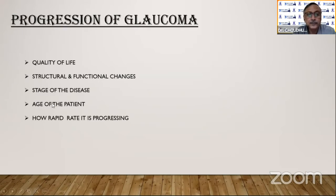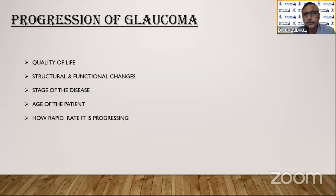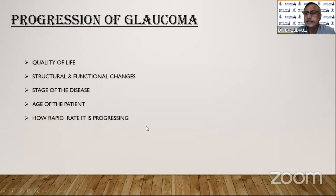Regarding the age of the patient: a younger patient has a longer life ahead, whereas an older patient has a shorter lifespan. This has to be taken into account before going for trabeculectomy. Once glaucoma progression occurs, it is sometimes very difficult to stop with drugs alone. So trabeculectomy may help depending on how rapidly it is progressing. In normal tension glaucoma, even if the pressure is low, you can still consider trabeculectomy.